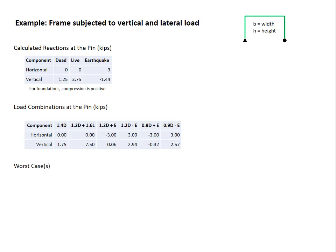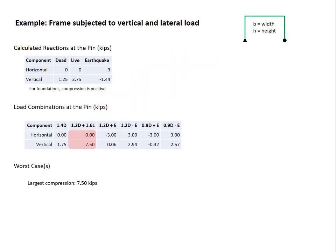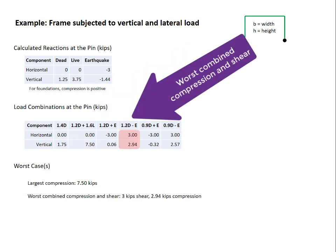These are the ones that I see. First, 1.2 dead and 1.6 live has the largest compression, the largest vertical force of 7.5 kips. If I'm designing a foundation, I want to make sure that that foundation can support the largest compressive load that it might experience. Next, the load case 1.2 dead minus earthquake has the worst combined compression and shear force. The compression of 2.94 kips is significantly smaller than the previous case.